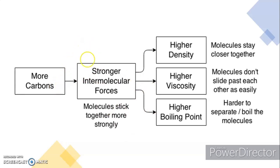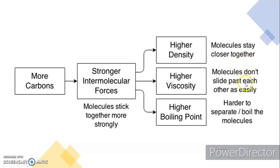That example relates to this illustration: diesel has a longer chain of carbon compared to gasoline, so you observe stronger intermolecular forces. When some molecules stick together more strongly, you observe higher density, higher viscosity, and higher boiling point. The molecules stay closer together, don't slide past each other as easily, and are harder to separate or boil.